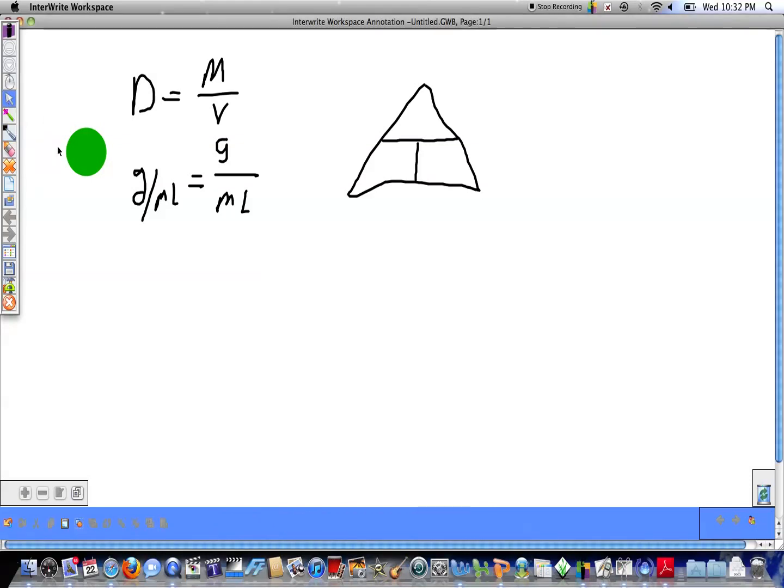Then we want to cover up the left side of the equation and just look at what's on the right. So, whatever is on the right side of the equation I want to put into my triangle. And so, I have mass over volume. So, the mass goes on top and the volume goes on the bottom. And this triangle method works with any three-term formula.